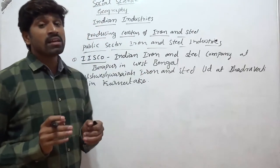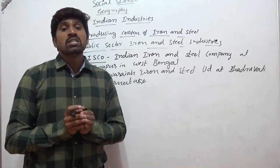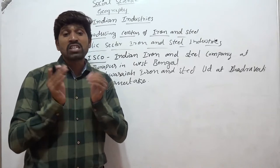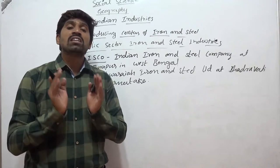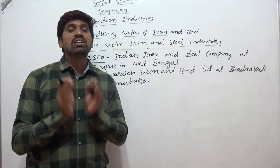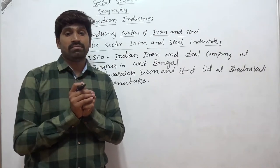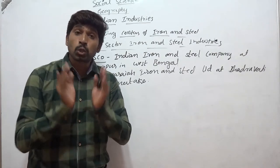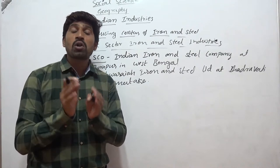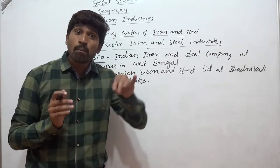Some important iron and steel plants were established during the five-year plans. These include Hindustan Steel Limited at Bhilai in Chhattisgarh, Hindustan Steel Limited at Rourkela, Sundargarh district in Odisha, and Hindustan Steel Limited at Durgapur in West Bengal. These plants were established with the help of Russia.